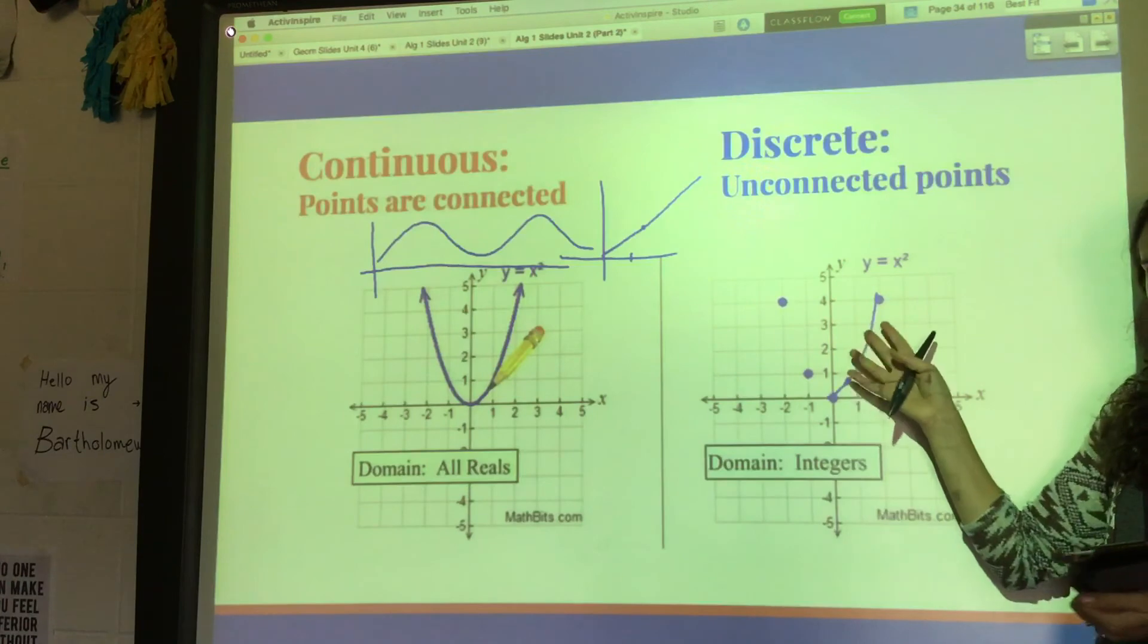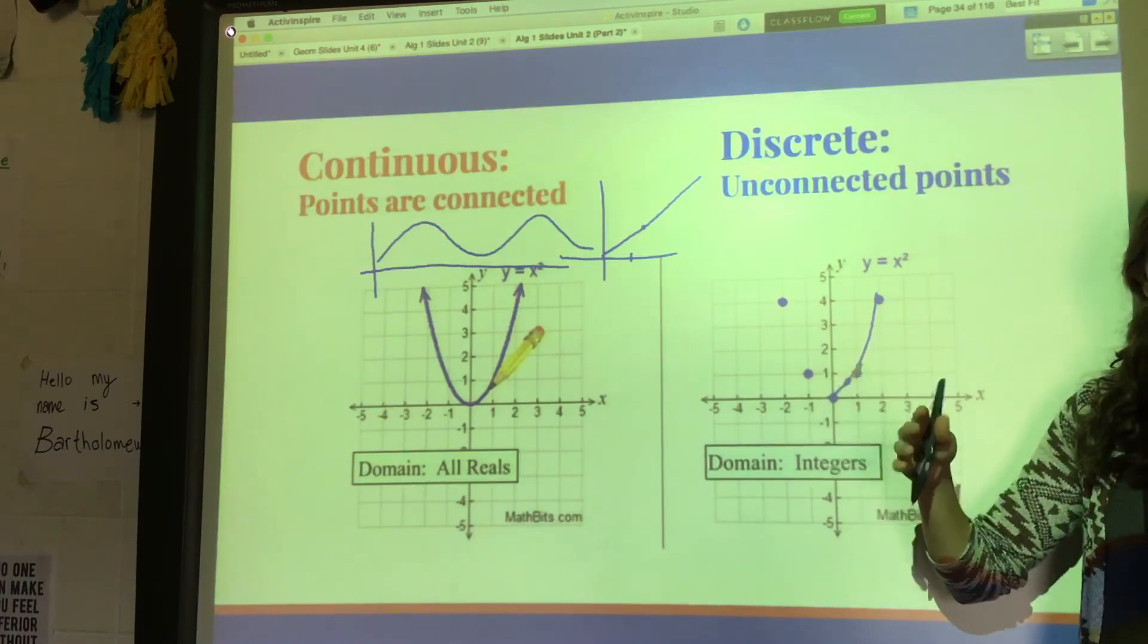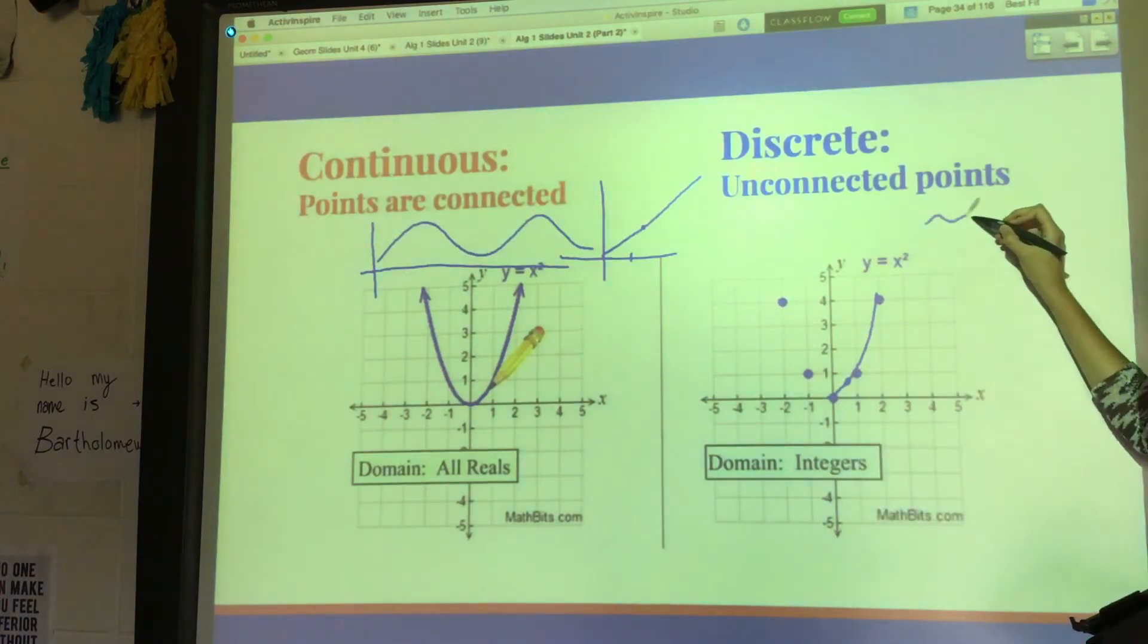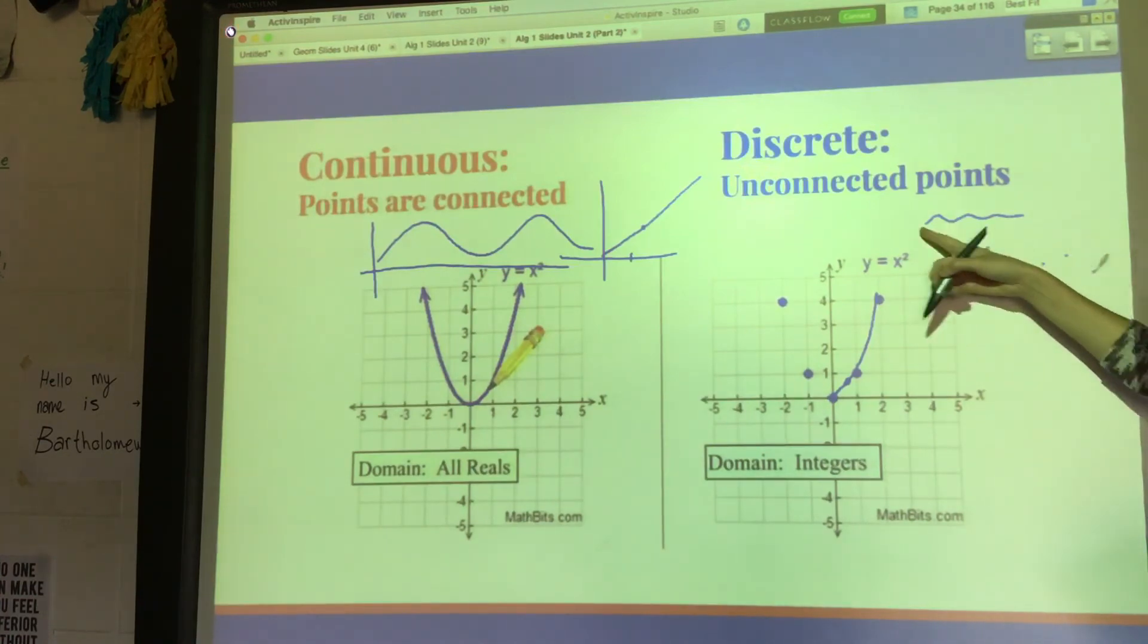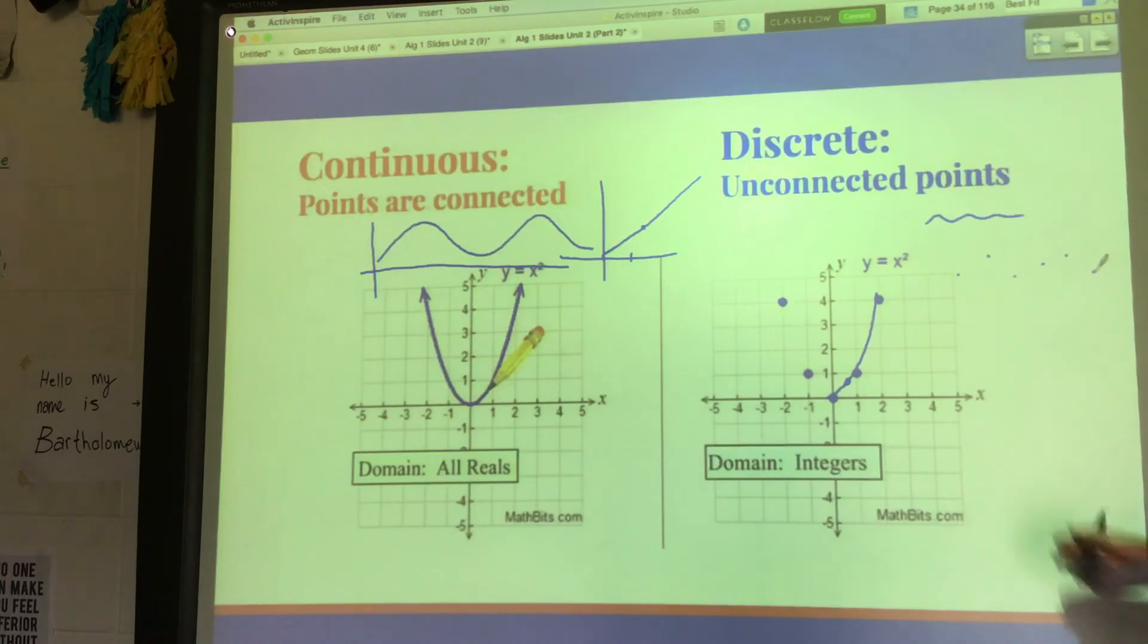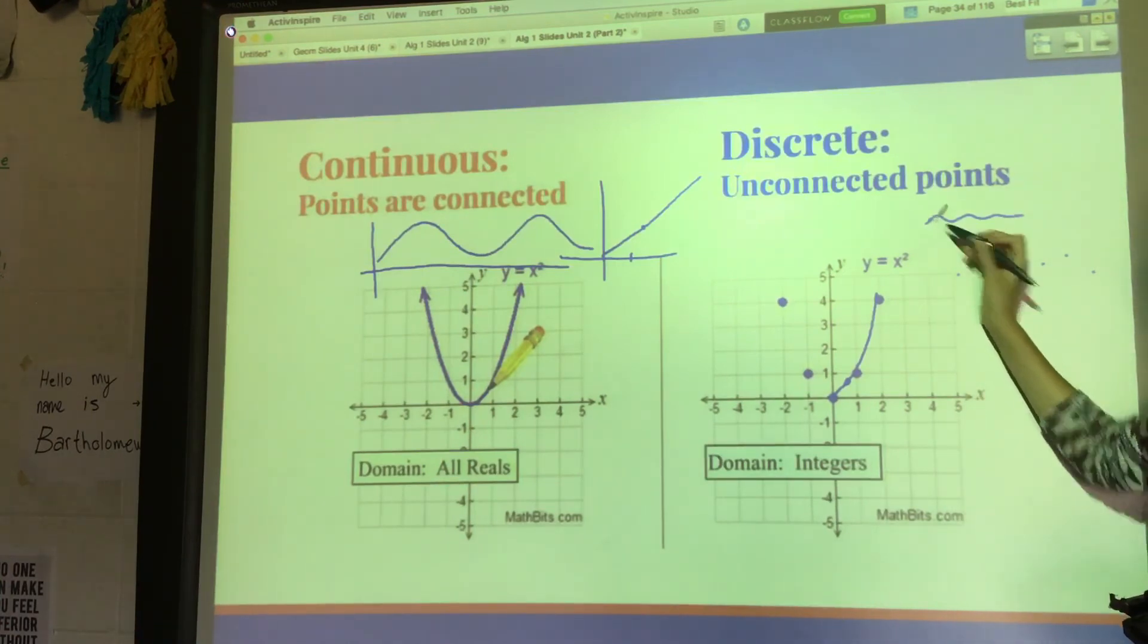For example, like the number of people in class over time would kind of go up and down just a little bit, but again it should just be discrete values. It shouldn't be a continuous thing because it doesn't make sense to connect those dots. I'm not gonna have like 0.75 of a person.